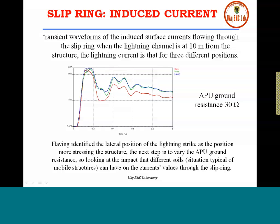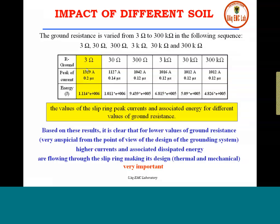Next, we examine the impact of different soil conditions by varying the ground impedance from 3 ohms to 300 kilohms. We see that the maximum current is reached with the minimum value of ground resistance. This will be important for Select to have guidelines for the design of the structure.